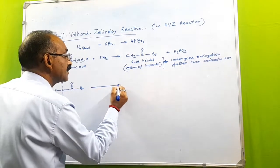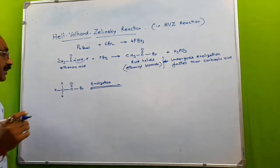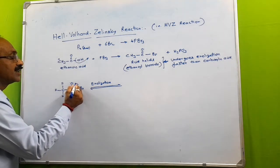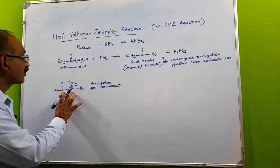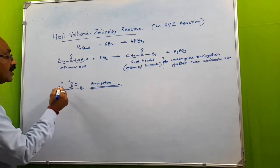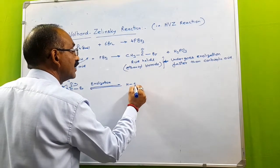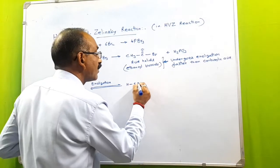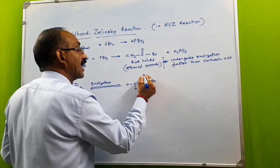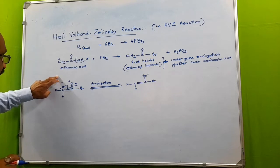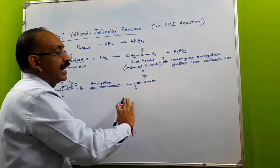This acid halide will undergo enolization, which means tautomerization occurs. The pi electrons of the C=O bond shift over the oxygen, so oxygen acquires a negative charge while carbon acquires a positive charge. To compensate, the electron pair of the C–H bond at the alpha carbon shifts in between the two carbons, forming a double bond there while a single bond is left between carbon and oxygen. The H⁺ released from the alpha carbon combines with the electronegative oxygen, and you get the enol form.